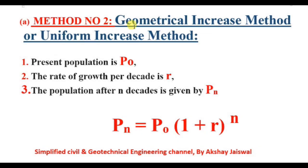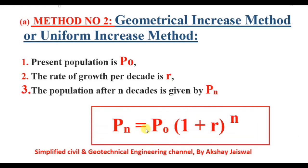Now we will see method number two: the Geometrical Increase Method. It is also known as the Uniform Increase Method. Now let's see the notations. Present population is given by P0. The rate of growth per decade is denoted by R, and the population after N decades is given by PN.